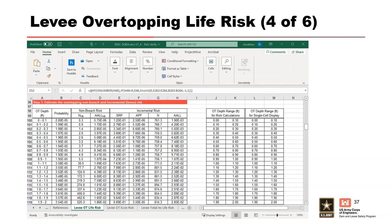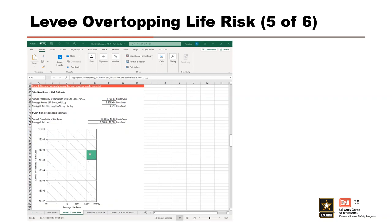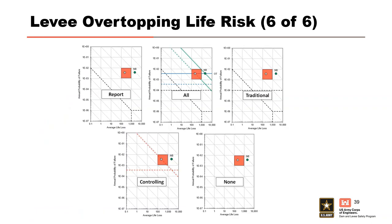Step 4 generates the plotting data and plot for non-breach risk based on the previous steps; no user input is required. Step 5 generates the plotting data and plot for overtopping incremental risk. The user selects reference lines to display on the risk matrix from five options: report all, traditional, controlling, and none. This is the last step of the levee overtopping risk tool.